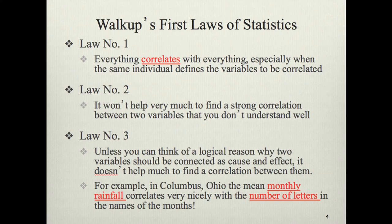Law number two: it won't help very much to find a strong correlation between two variables that you don't understand well. This is where the role of theory should come in, guiding your research and explaining your hypotheses. There must be some sound theoretical rationale for why two variables are related, or why one group should have a higher, lower, or simply different score on a variable than some other group — covering both correlational and experimental designs.